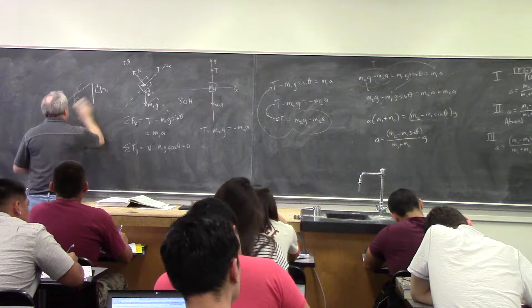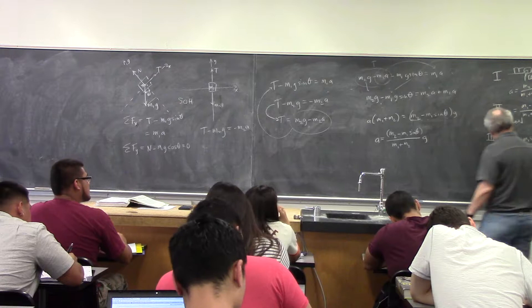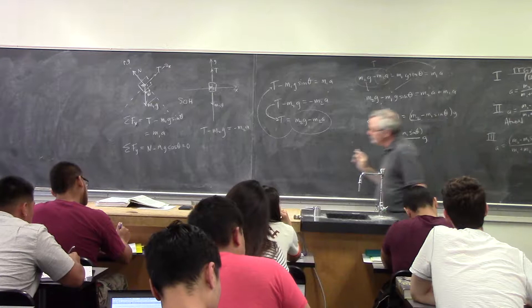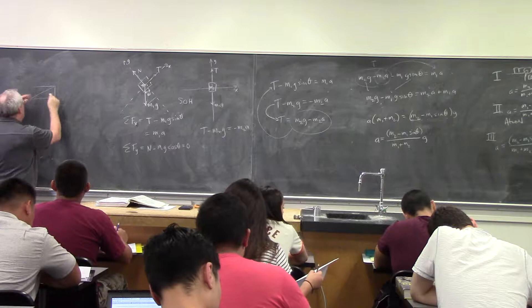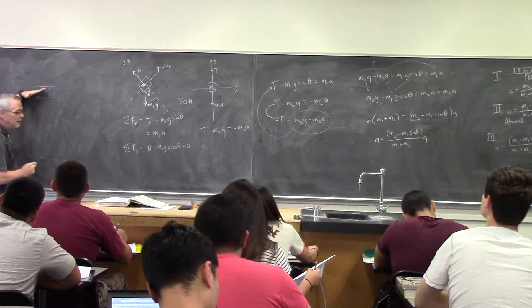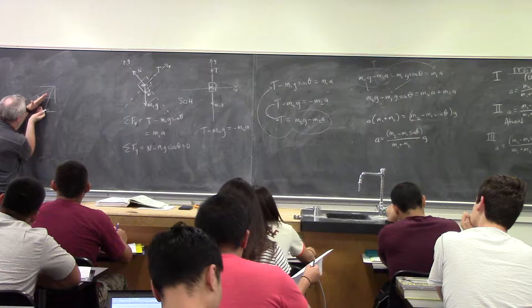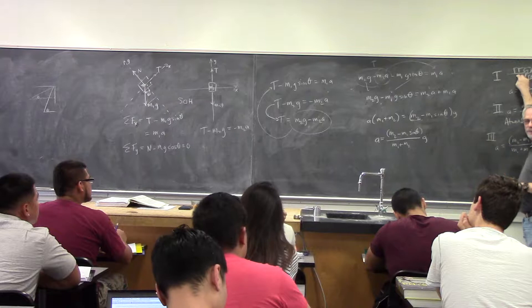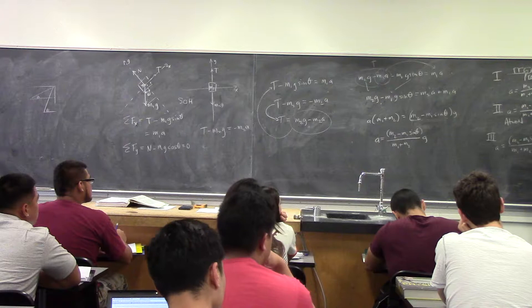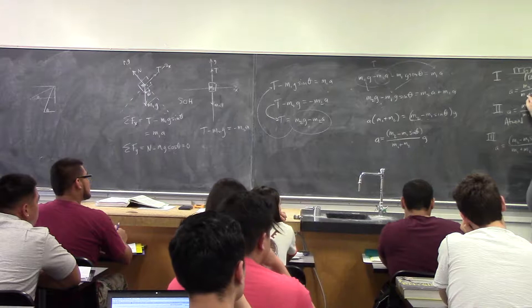I want to prove to you that this result is the same as the two simpler cases. In the very first case, if this angle is theta and I keep raising the incline, theta gets smaller. When I get all the way up, theta becomes zero. So what happens when theta goes to zero? Sine of zero is zero, so I get m₂ over (m₁ plus m₂). Bingo — it worked!